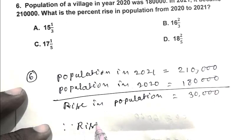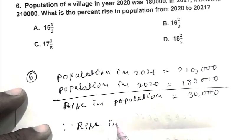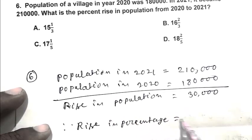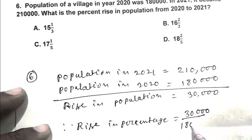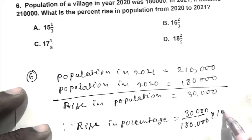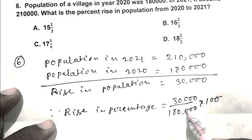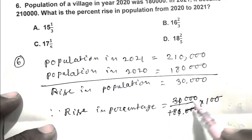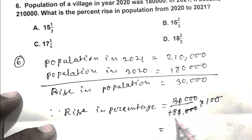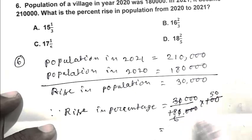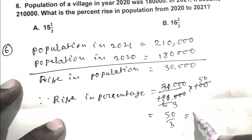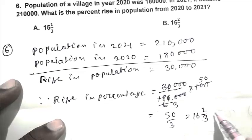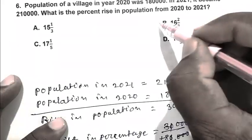So rising percentage, rise in percentage, that is 30,000 upon 1,80,000 multiplied by 100. So friend, 50 upon 3 that is 16 and 2/3 percent. So friend, B is the right answer.